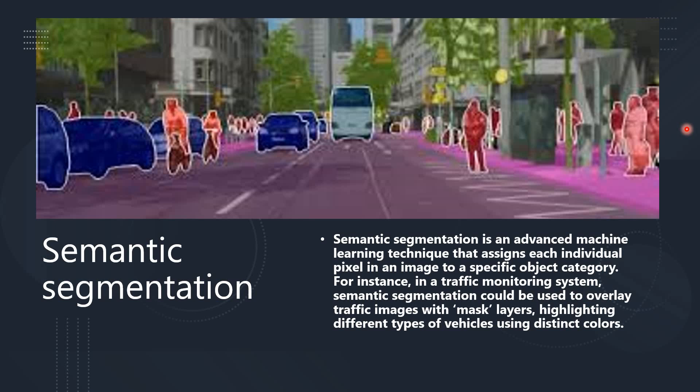Next comes semantic segmentation. It is an advanced machine learning technique that assigns each individual pixel in an image to a specific object category. For instance, in a traffic monitoring system, semantic segmentation could be used to overlay traffic images with mask layers highlighting different types of vehicles using distinct colors. You can see the example in front of you. It is really advanced and it helps you in identifying things much more easily from images.